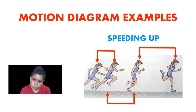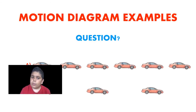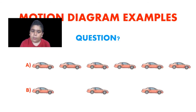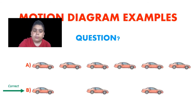Now I'll pose to you a question: which of these cars is moving faster — Car A or Car B? Assume both diagrams are showing the same amount of time between frames. The correct answer would be this one, because the spaces between the intervals are larger. This means the car has travelled a further distance in the same amount of time the other car has.